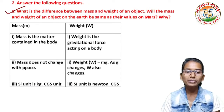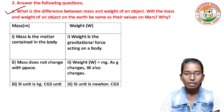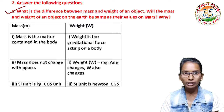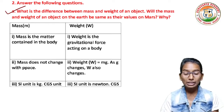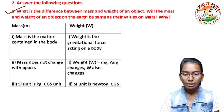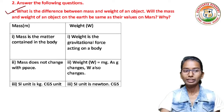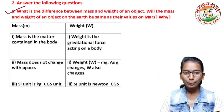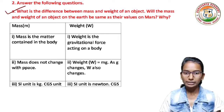We will see the difference between mass and weight. First column is mass, second column is weight. First point: mass is the matter contained in the body, and weight is the gravitational force acting on a body. Second point: mass does not change with space.